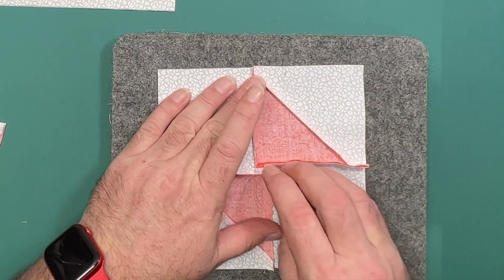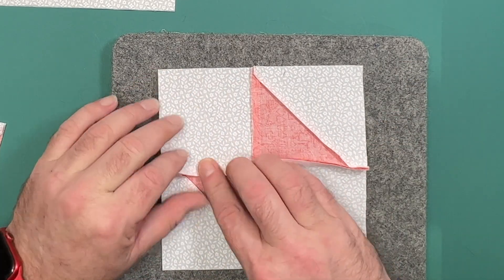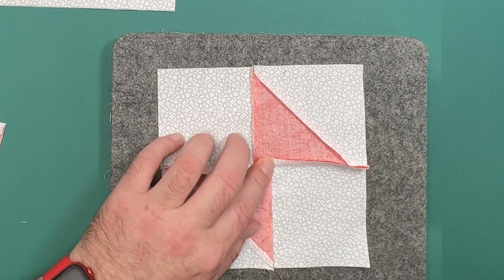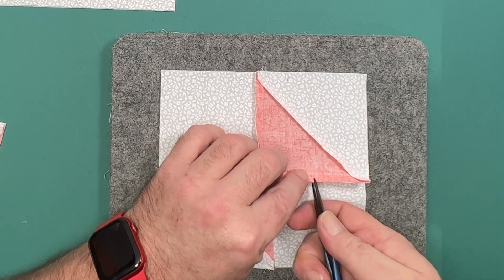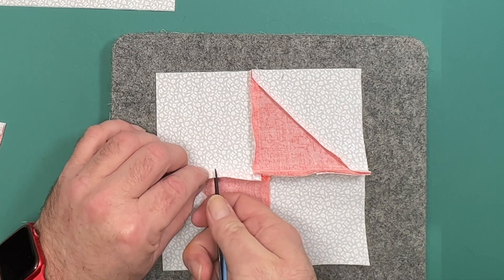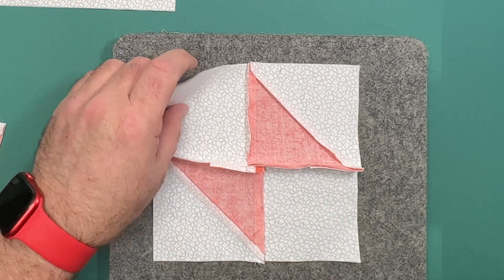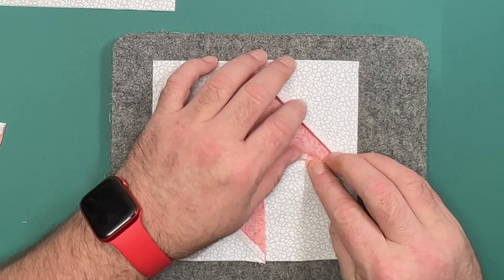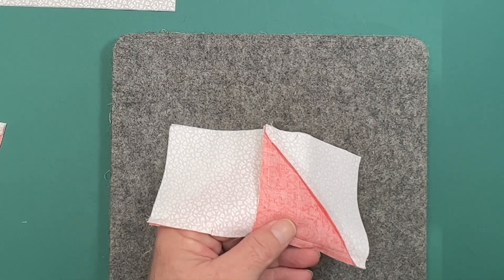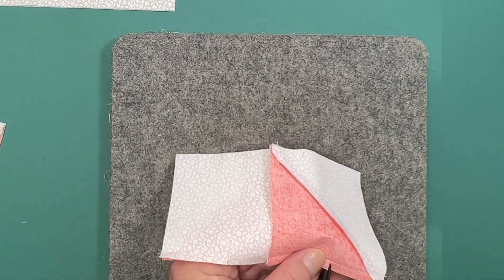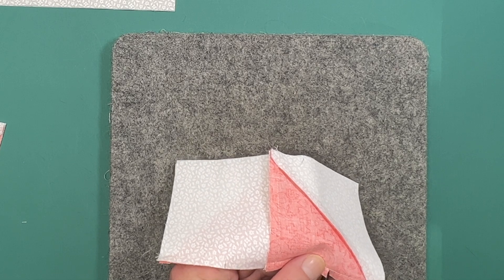We then make sure that all of our seam allowances are going in the same direction, so in this instance they will go counterclockwise. I also decided while doing this, and because we're working on reducing bulk, to clip into my seam allowance on either side of the spun center so that the points from our half square triangles will lay flat as well.